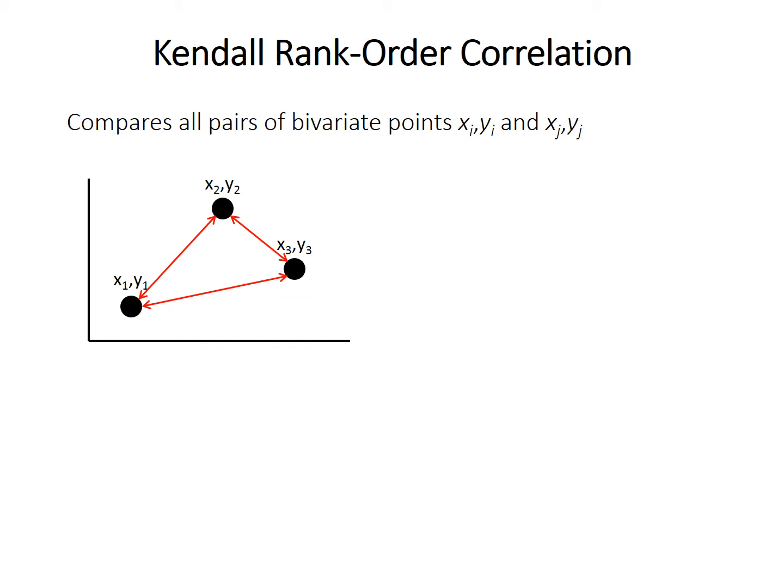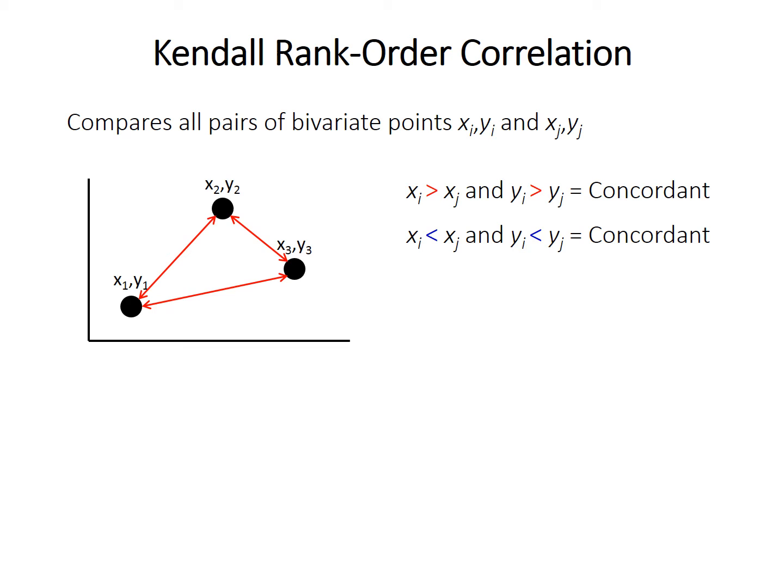The Kendall rank order correlation method is quite different. Instead of using the covariance of the points, it compares all possible pairs of points. Each point has an x and y coordinate, and the method compares the x coordinate of one point (point i) to another (point j), and similarly their y coordinates. If the x coordinate of one point is greater and the y coordinate is also greater, that pair is concordant. Likewise, if both x and y are smaller in one point than the other, it's also concordant.